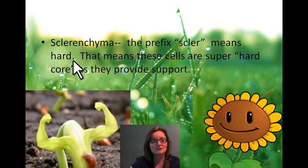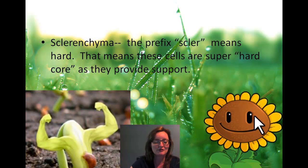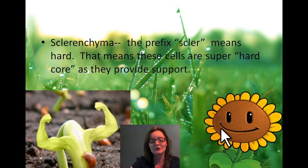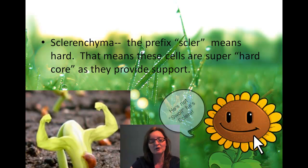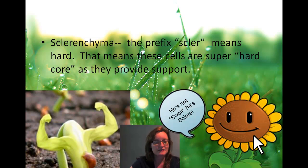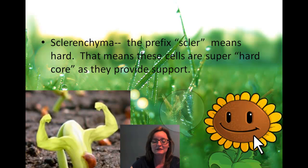For sclerenchyma, remember that it's the super strong one. 'Sclere' means hard, so these cells are super hardcore as they provide support — whether that's holding up a huge reproductive structure like a flower, or even breaking through the ground as a brand new plant. It's a little photoshopped, but that seedling flexing its biceps is definitely stooped up on its sclerenchyma.